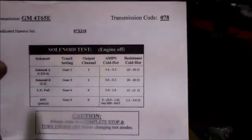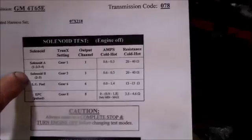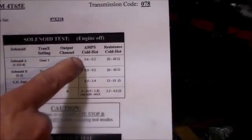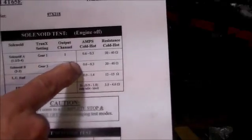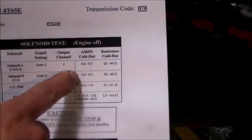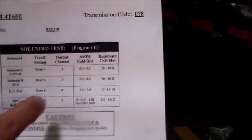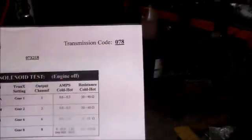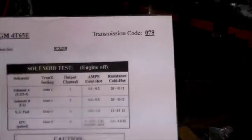So I have the Tranex machine hooked up, and I'm kind of standing behind the camera and I'm holding the paper in front. As you can see here, solenoid A, solenoid B, amps hot and cold is 0.6 to 0.3, so that's what we're looking for when we turn our machine on. And I got it hooked up, and for this particular code, a 4T65E, we're going to use code 078 on the machine. So let's boot the machine up.